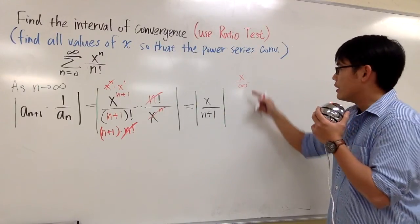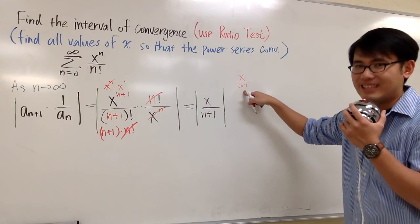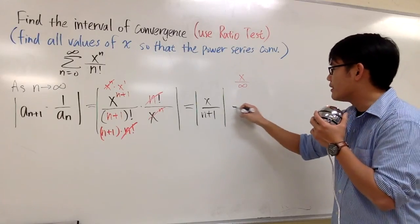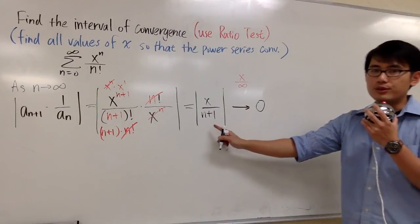A real number over infinity, we know that will be what? That will be 0. So this right here, we approach 0 as n goes to infinity.